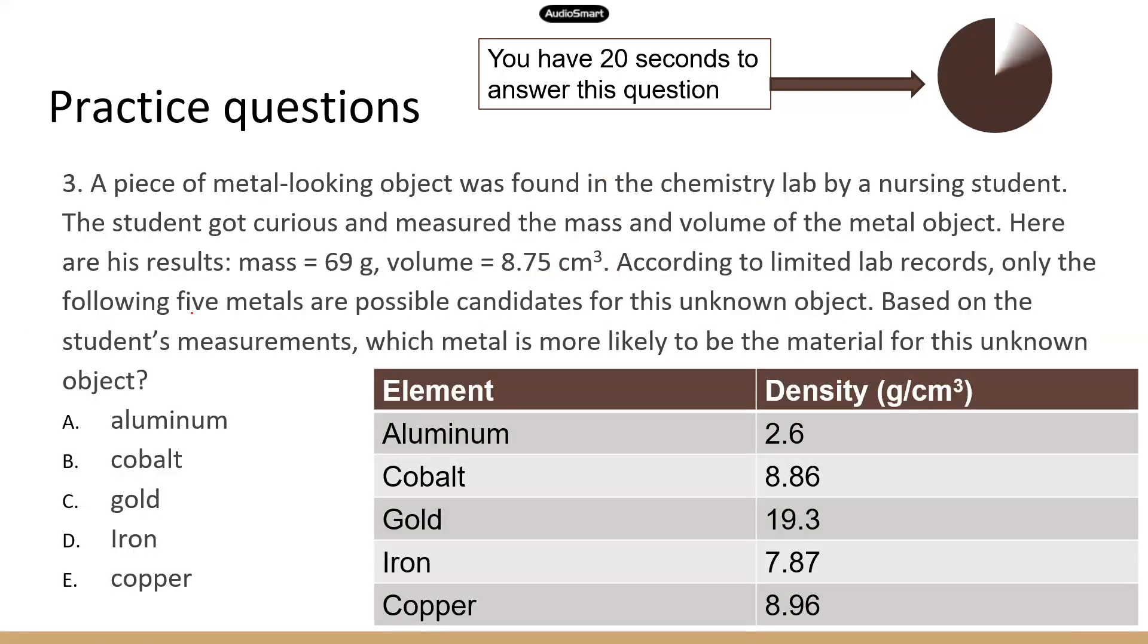Okay. So this is more or less of an applied question. So you have this information and you have a table of elements that you can choose from. So remember I said previously that density is a unique property for different substances. So as long as you can calculate that density, you can really narrow down what material this is. All right, guys.